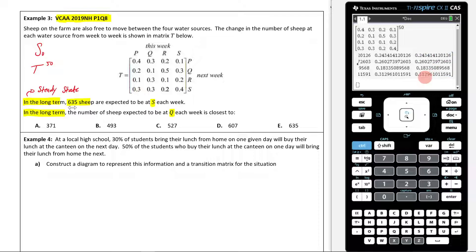What they've told me is that in the long term, 635 sheep are expected to be at S. Well, we know that 31% of the sheep will be at S in the long term. So what I can do now is say, I know that for S, I can go 0.313 times by the total amount of sheep is going to be 635. So 31.3% of the total amount of sheep will be 635 sheep. Now I can use this to figure out the total amount of sheep.